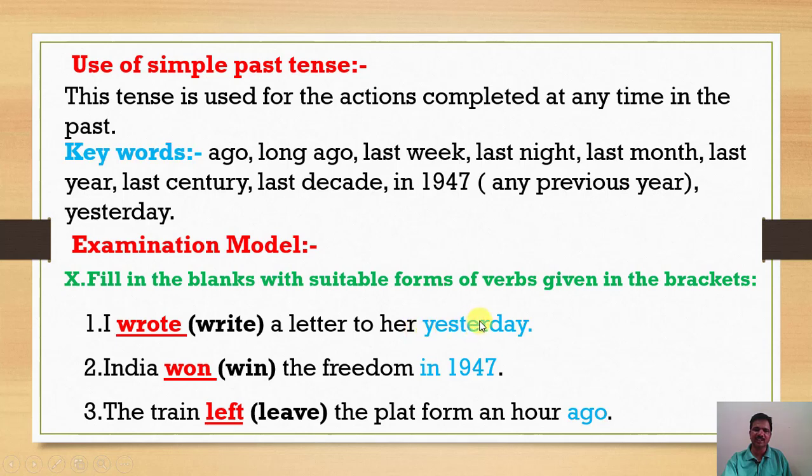I dash write a letter to her yesterday. Yesterday is an indication that this sentence is simple past tense. In the examination, write is given in the first form. Write to wrote is V2. So wrote is the suitable answer. India dash win the freedom in 1947. 1947 is already in the past. Win is the first form of the verb, won is the past form. So India won the freedom in 1947. The train dash leave the platform an hour ago. Ago is the indication. Leave is V1, then V2 is left. Left is the right answer.